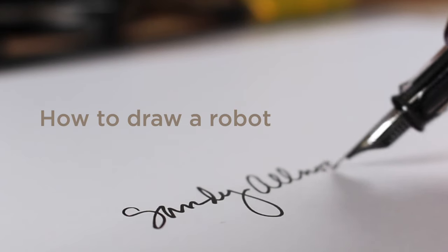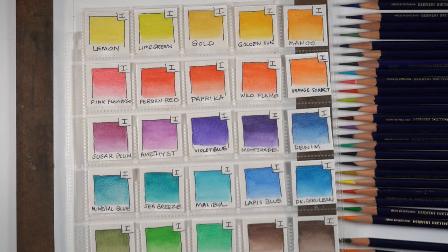So let's talk about the supplies real quickly. First, Inktense pencils, which are kind of a watercolor pencil, but they're more of an ink pencil. And I've swatched them out.